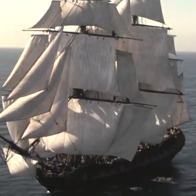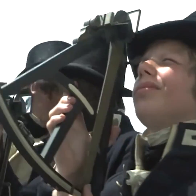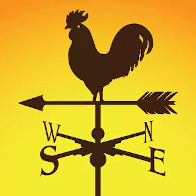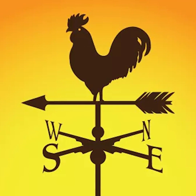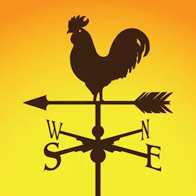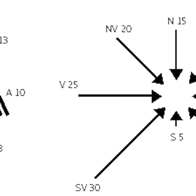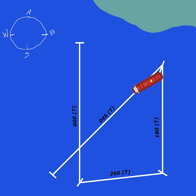In the age of sail ships, the rhumb system was used for navigation. But now it is used mostly to describe the direction of the wind, as it describes direction very approximately. When we are dealing with nautical navigation, we are not using rhumbs.